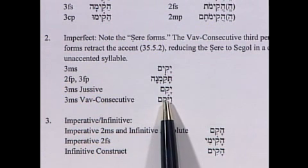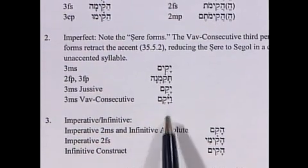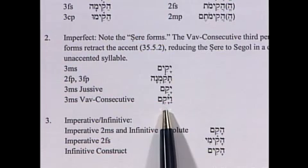With the vav-consecutive, it pulls the accent, so the tsere is now in a closed and accented position. Hebrew requires a short vowel there, so the tsere reduces to a segol. For the imperatives and infinitives, we also have special tsere forms — the imperative 2FS gives ha-qimi, with the hireq-yod as the thematic vowel uniting the first root letter (qof) and the third root letter (mem).